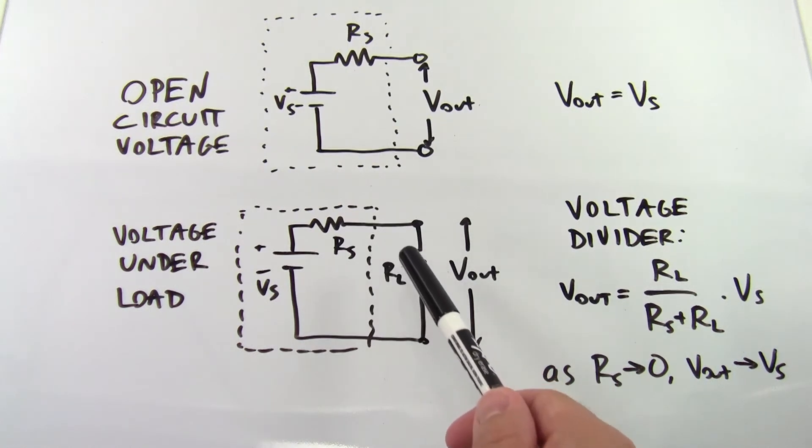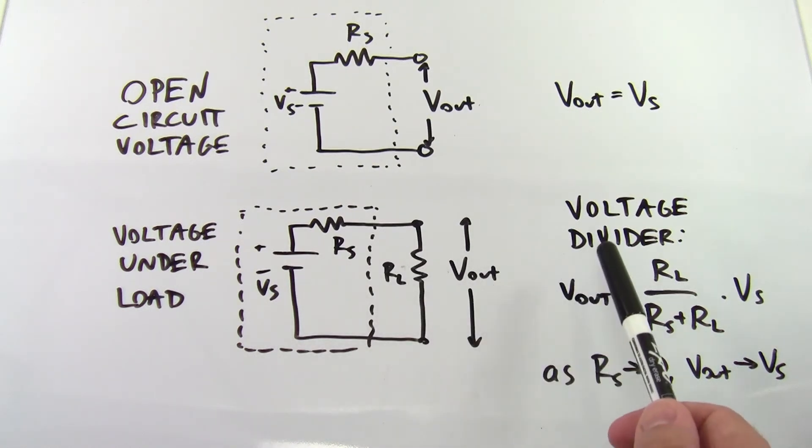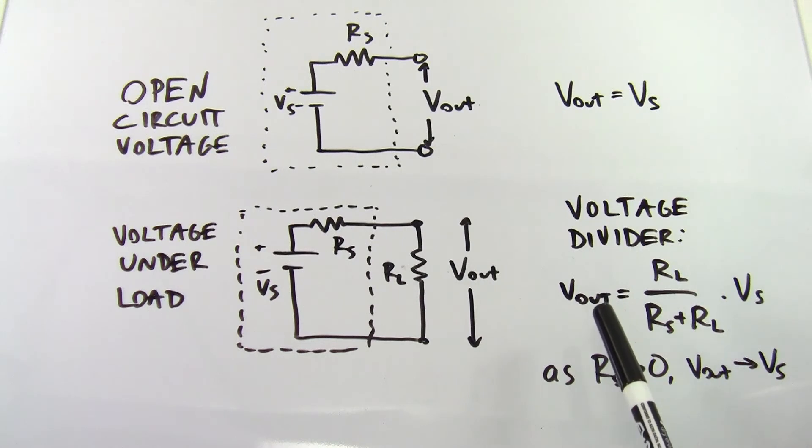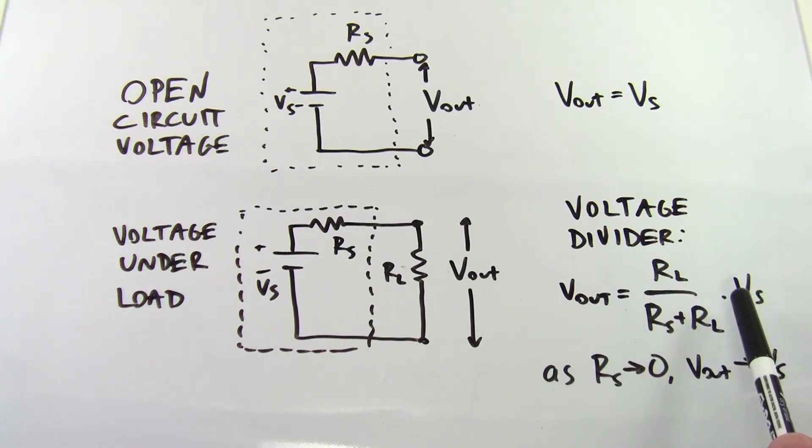Putting two resistors in series like this forms a circuit called a voltage divider. I'm not going to derive this equation, that's a topic for another video, but for a voltage divider made from two resistors, the equation for the output voltage is Vout equals RL over RS plus RL times VS.